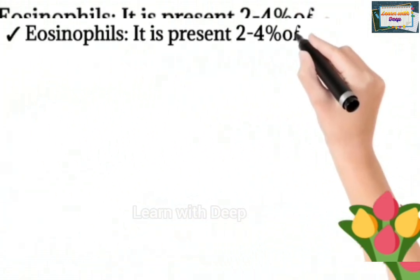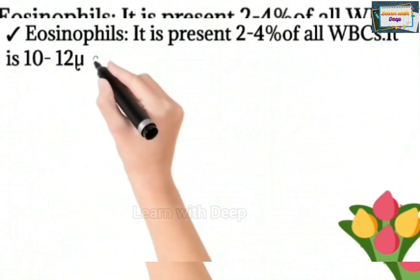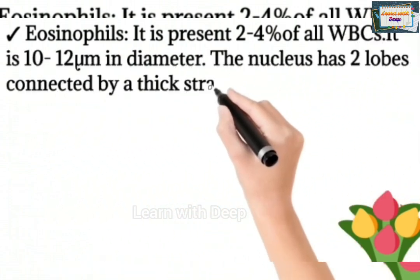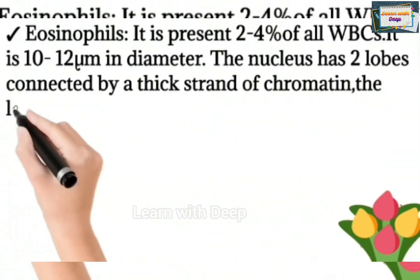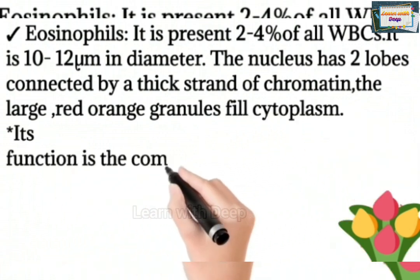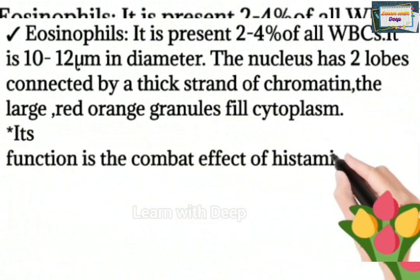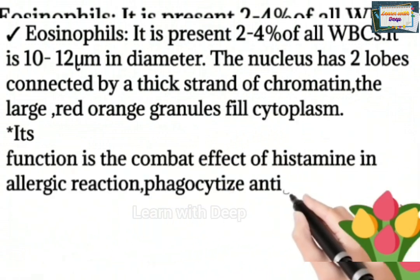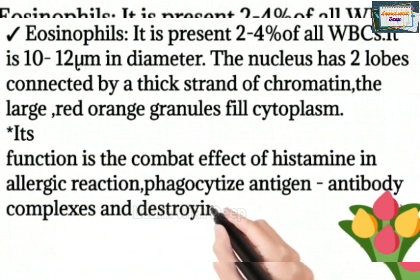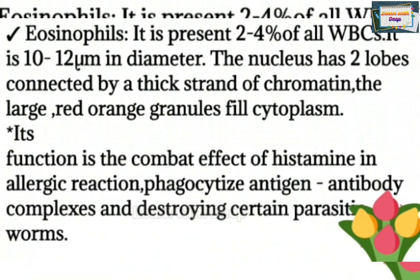Eosinophils make up 2 to 4% of all WBCs and are 10 to 12 micrometers in diameter. The nucleus has two lobes connected by a thick strand of chromatin. Large red-orange granules fill the cytoplasm. Their function is to combat the effects of histamine in allergic reactions and to phagocytize antigen-antibody complexes.